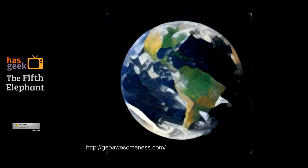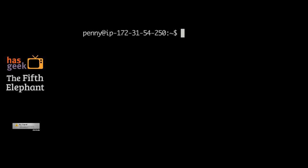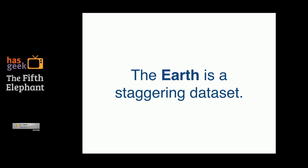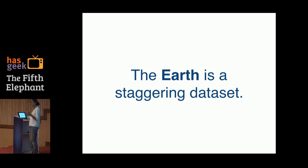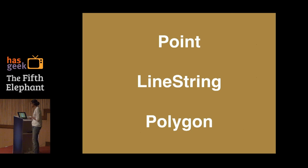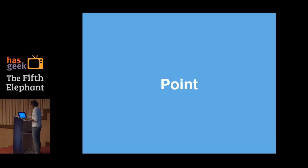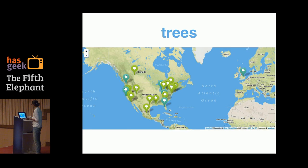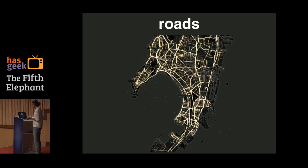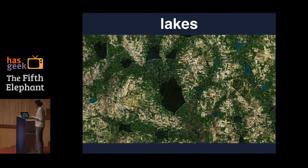Before chai, let us have some introductions to the Earth, but as data. The Earth is a staggering data set. Let us take a moment to think about everything that we have seen throughout our lifetimes — the sheer diversity of the objects, both natural and manmade, that we have had the fortune to look at. You will be surprised to know that all these objects, in all their diversity and entirety, can be represented by three simple geometries: points, line strings, and polygons. Some examples of points are mountain peaks and trees. Some examples of line strings are rivers and roads. And some examples of polygons are buildings, lakes, and fields.